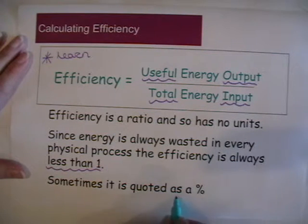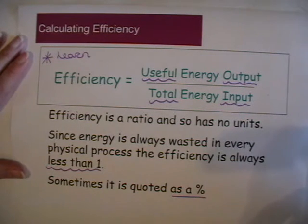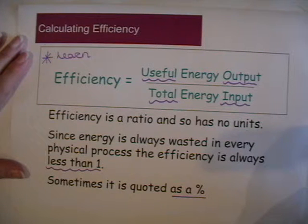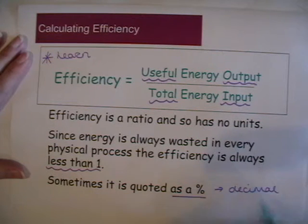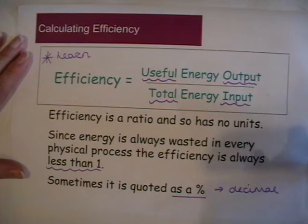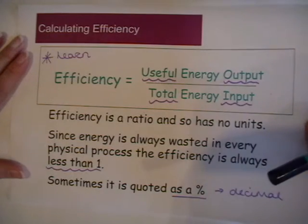Sometimes efficiency is expressed as a percentage. If you are given the efficiency in a question as a percentage, you must convert it to a decimal before you calculate.